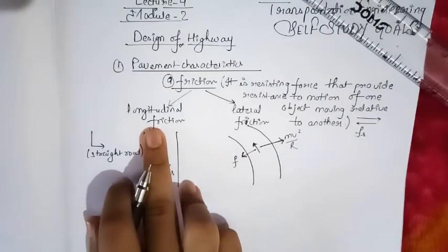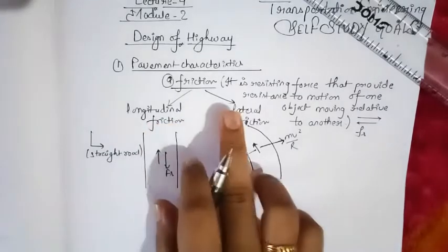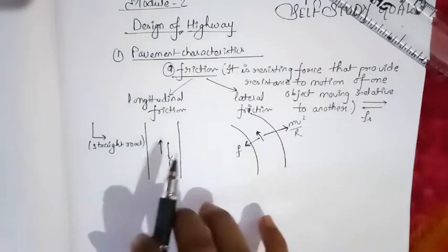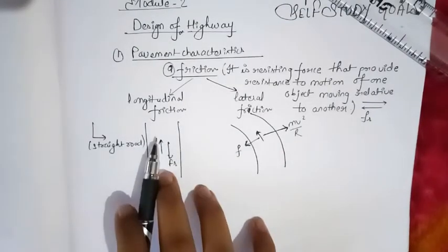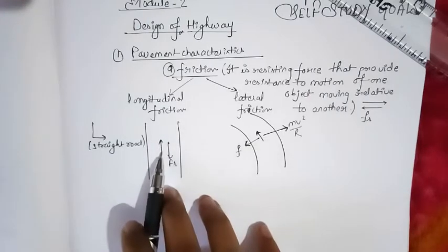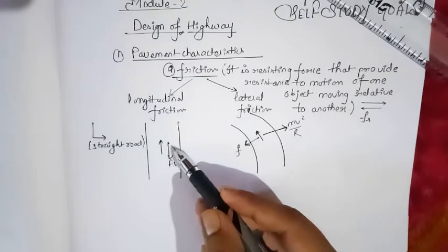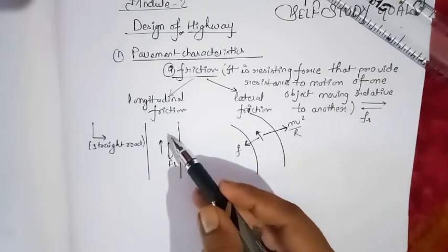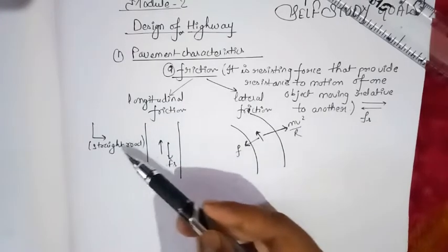We will see the longitudinal friction first. On a straight road, when a car or any vehicle is moving in the longitudinal direction, the frictional force plays a role in the opposite direction of the motion of the vehicle. This is the case of longitudinal friction on a straight road.